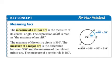Key concept, measuring arcs. The measure of a minor arc is the measure of its central angle. The measure of an entire circle is 360 degrees. The measure of a major arc is the difference between 360 and the measure of its related minor arc. So we would do 360 minus 50 in this case. The measure of the minor arc is 50, so the measure of the major arc is 360 minus 50, or 310. The measure of a semicircle is always 180.